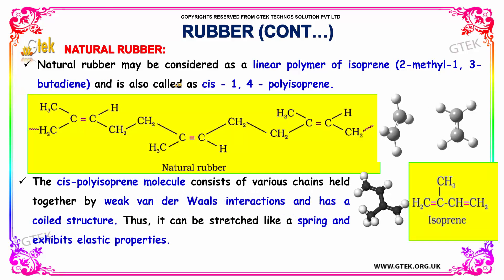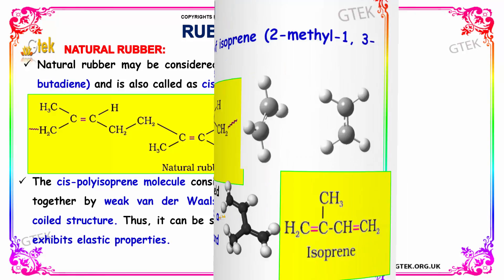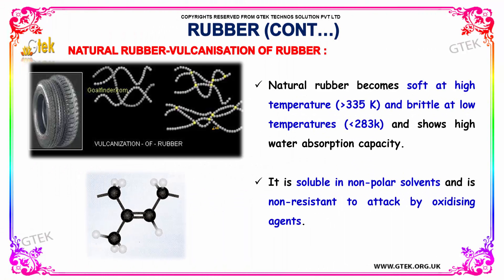Natural rubber may be considered as a linear polymer of isoprene and is also called cis-1,4-polyisoprene. This is the general structure of natural rubber with n units, and this is the diagrammatic representation of isoprene. The cis-polyisoprene molecule consists of various chains held together by weak Van der Waals forces of interaction and has a coil structure, thus it can be stretched like a spring and exhibits elastic properties.